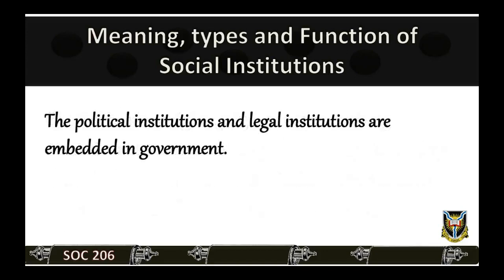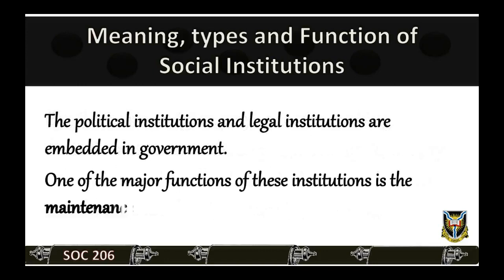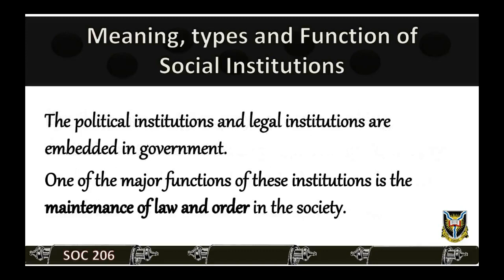The political institutions and legal institutions are embedded in government. One of the major functions of these institutions is the maintenance of law and order in the society. Another function they perform is to protect the society from external threats and protect members of the society.